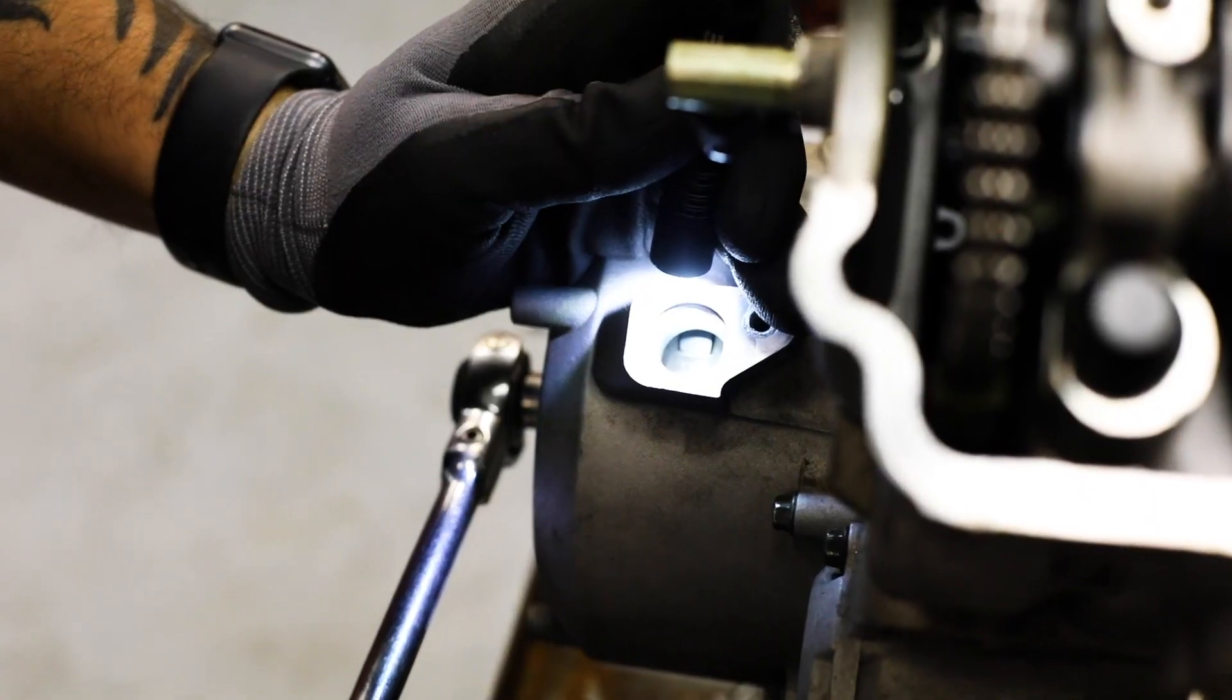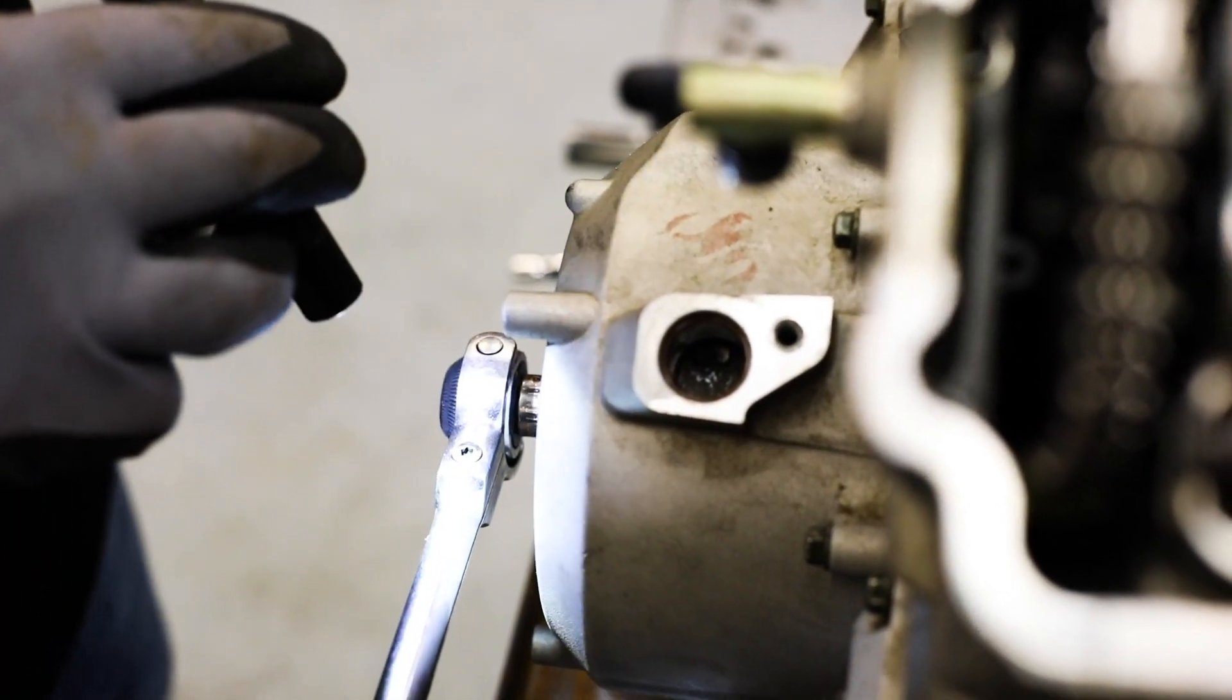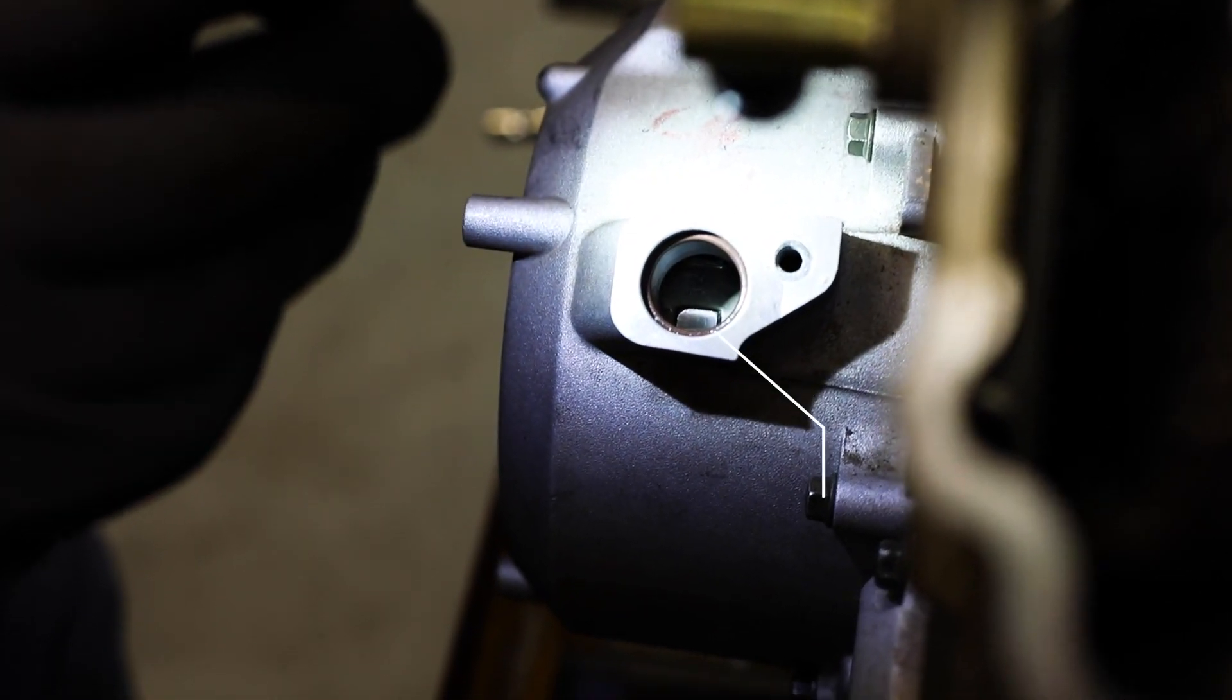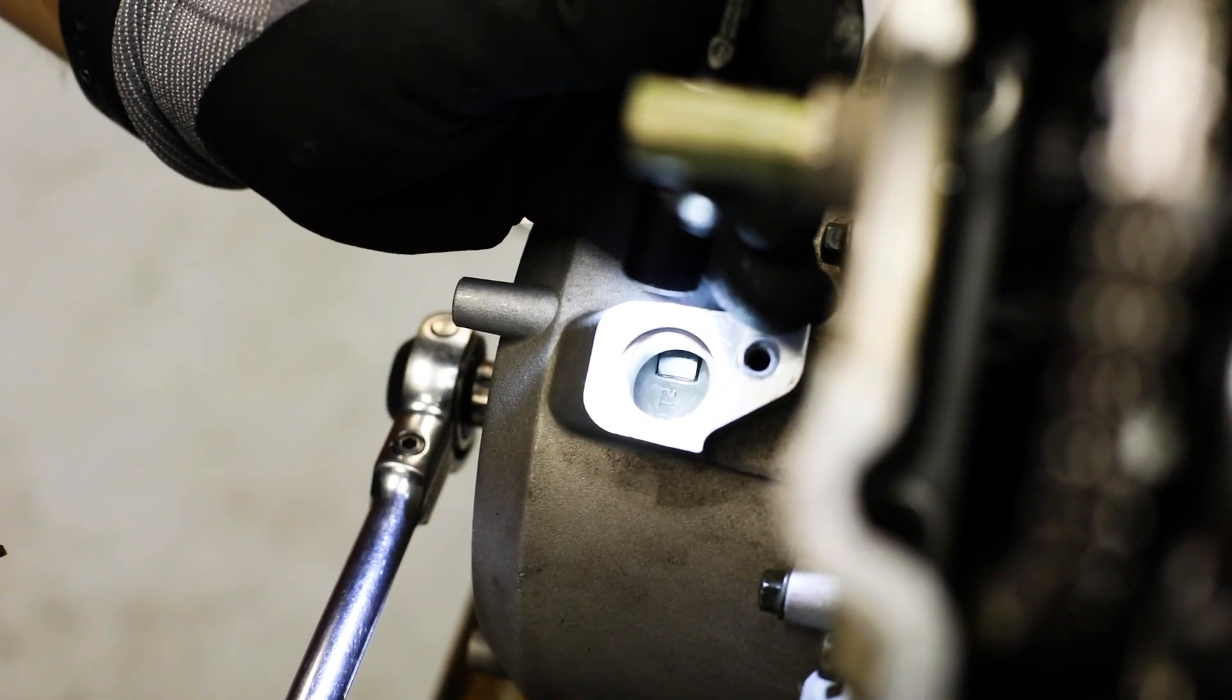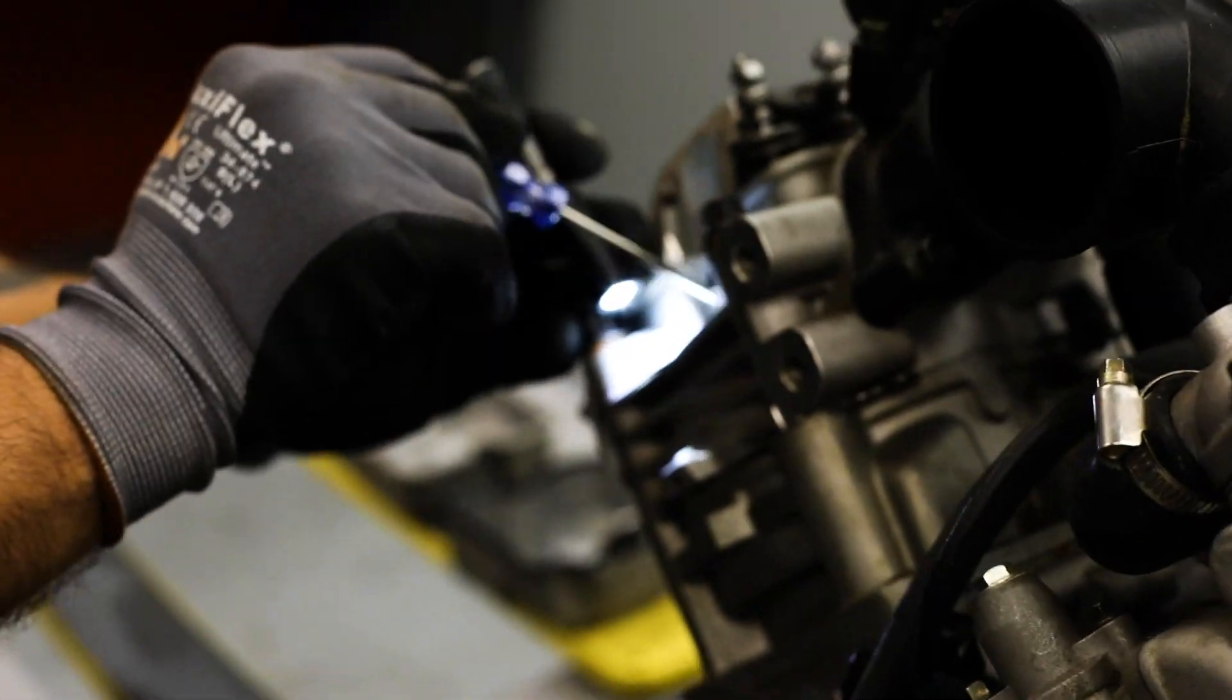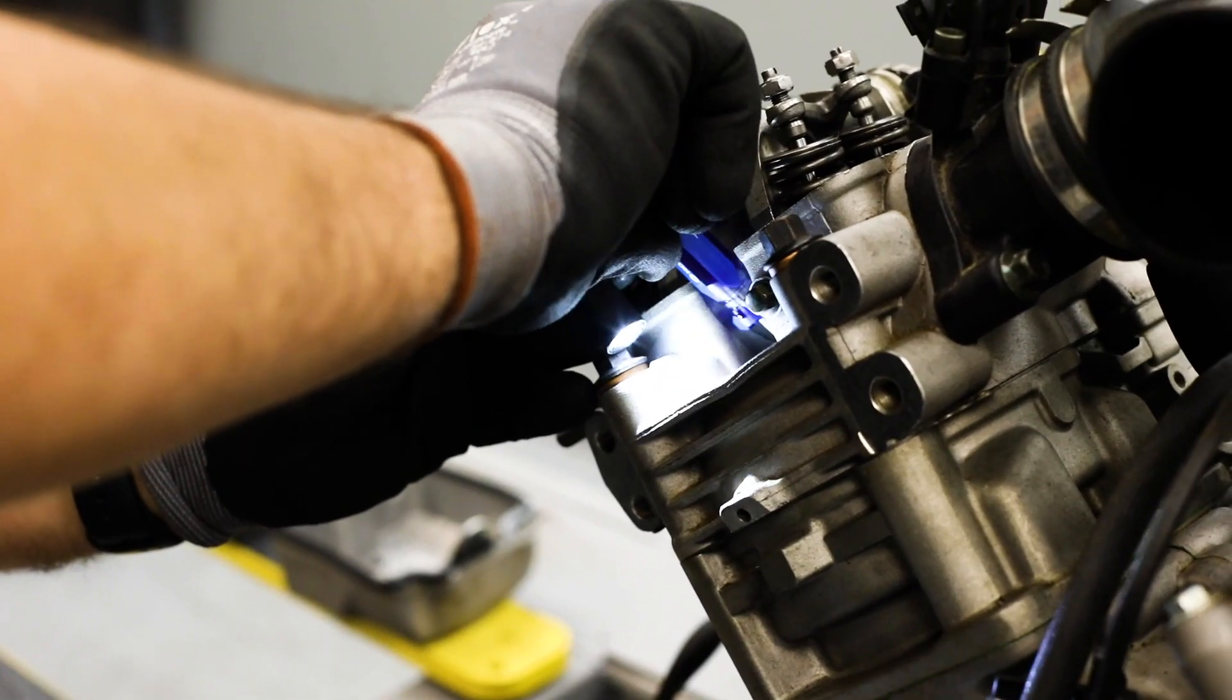When timing the left cylinder, you want to confirm that your timing mark says T2 on the flywheel, and then you would check the piston to make sure it's at top dead center, which it is.